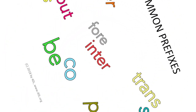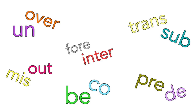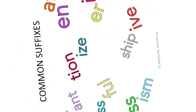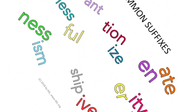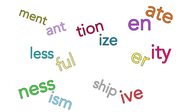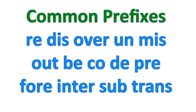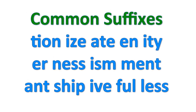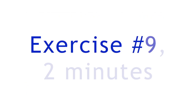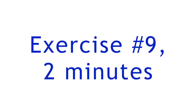'Pre' means before. A prefix is something before a root word; a suffix is something after a root word. Words will divide after prefixes and before suffixes. Here are some of the most common prefixes and suffixes. Number nine — see you back in two minutes.